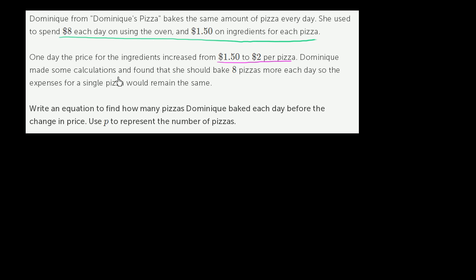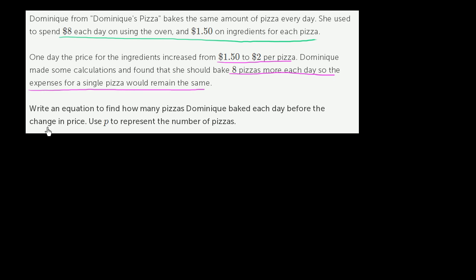Dominique made some calculations and found that she should bake eight more pizzas each day so the total expenses for a single pizza would remain the same — meaning if we spread the cost of the oven across all of the pizzas. Write an equation to find out how many pizzas Dominique baked each day before the change in price. Use P to represent the number of pizzas.